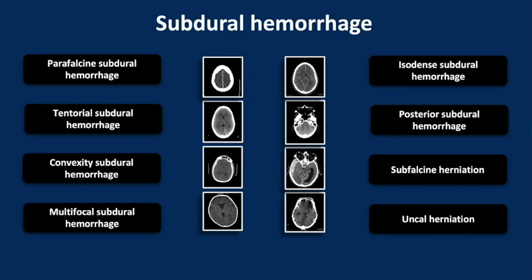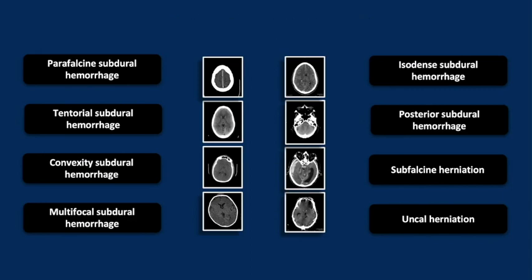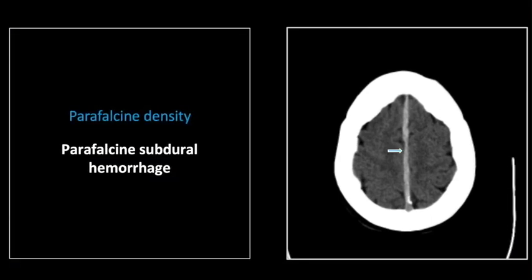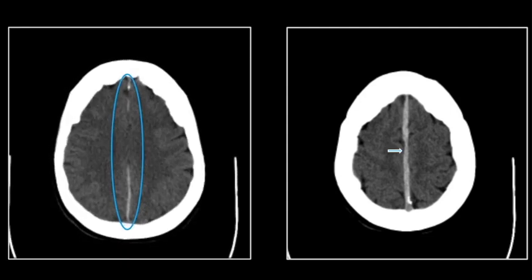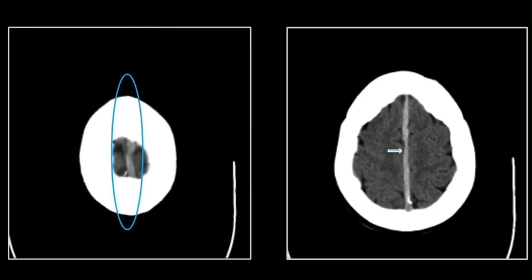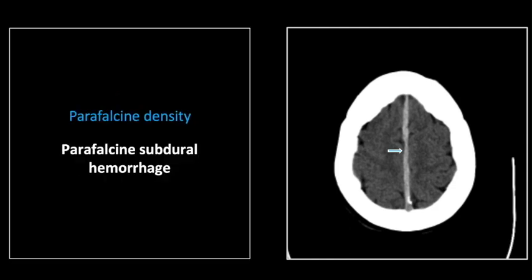Our topic for this session will be subdural hemorrhage. Our first case is a relatively straightforward case of a parafalcine subdural. You see the widening and increased density of the falx, which generally is at least somewhat dense. Here you can follow it throughout its course. It is too prominent, but certainly these are missed with some frequency. Again, a classic case of a parafalcine subdural hemorrhage.